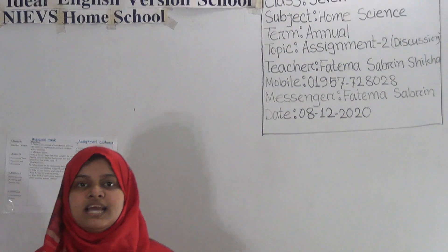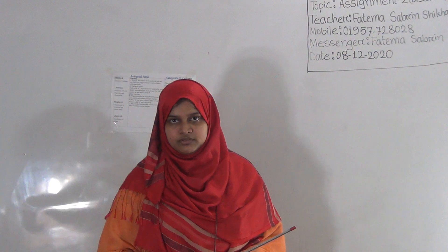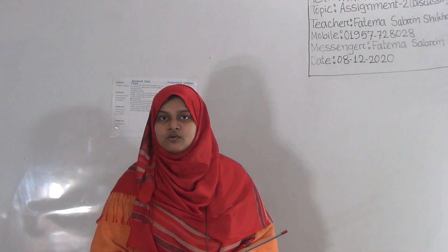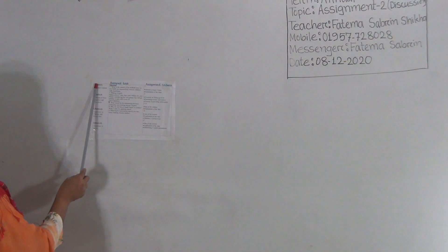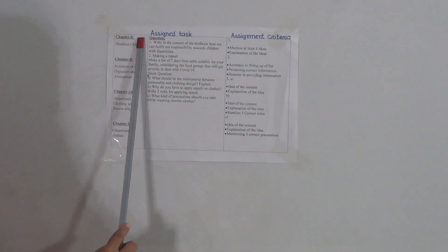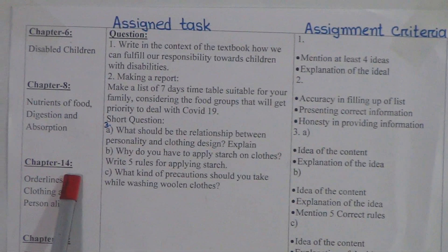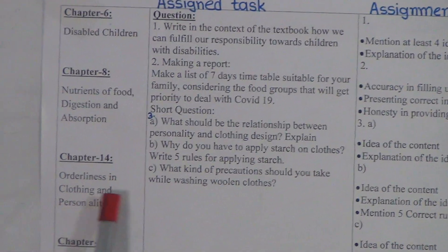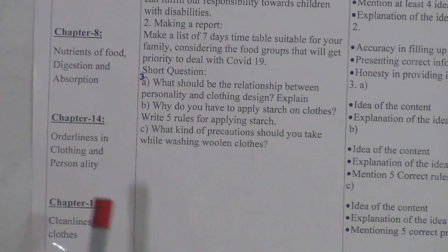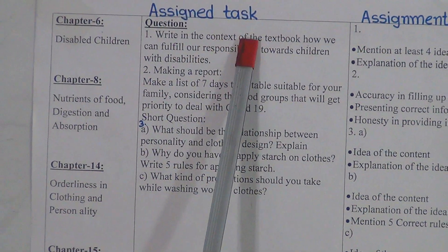As you have submitted your first assignment, today I'm going to talk about your second assignment. The chapters given for your second assignment are: chapter 6 - disabled children, chapter 8 - nutrients of food, digestion and absorption, chapter 14 - orderliness in clothing and personality, and chapter 15 - cleanliness of clothes.